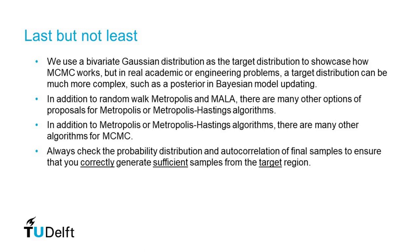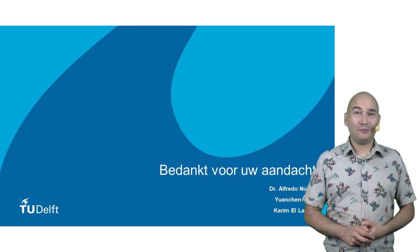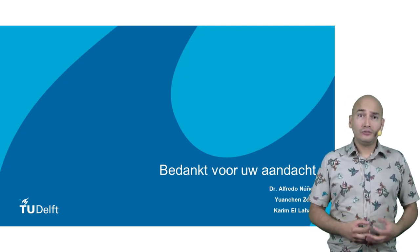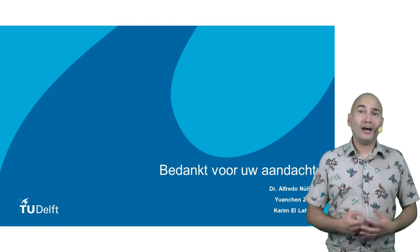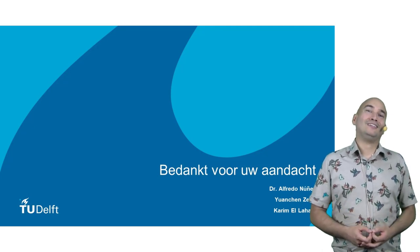In addition to Metropolis or Metropolis-Hastings algorithms, there are many others for MCMC. Always check the probability distribution and autocorrelation of final samples to ensure that you correctly generated sufficient samples from the target region. We are now done with this part of week 1.8, and it's time to take a critical look at the videos and study materials, and to start trying and playing with the algorithms during the coding session.